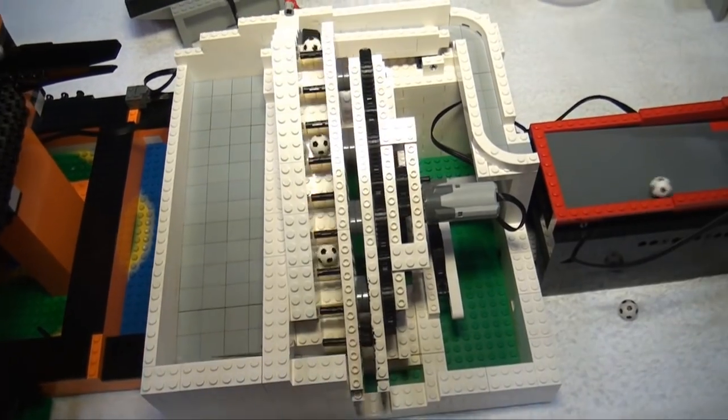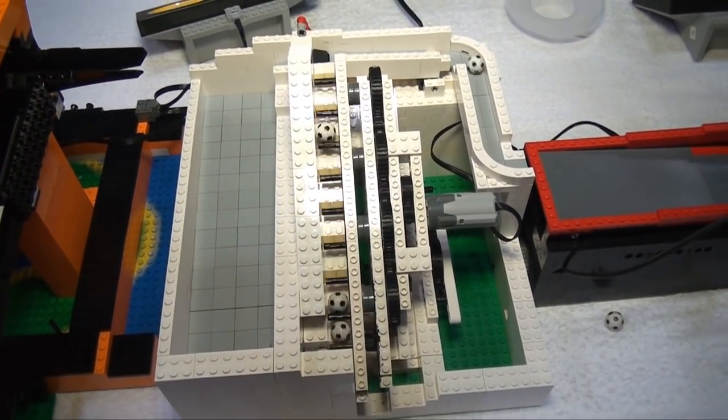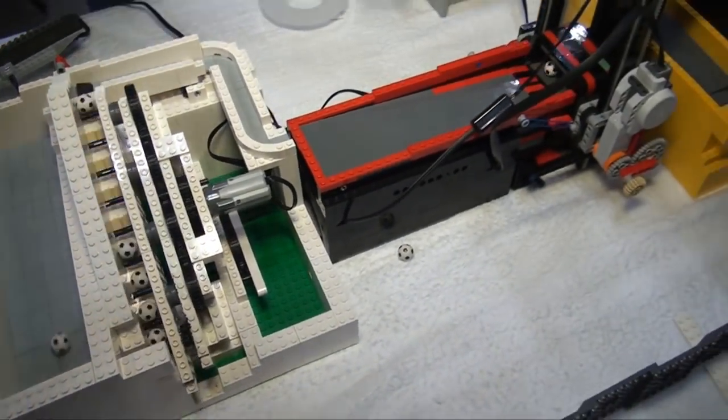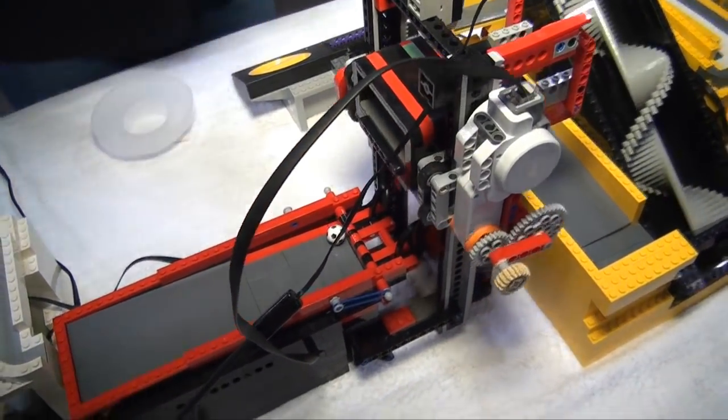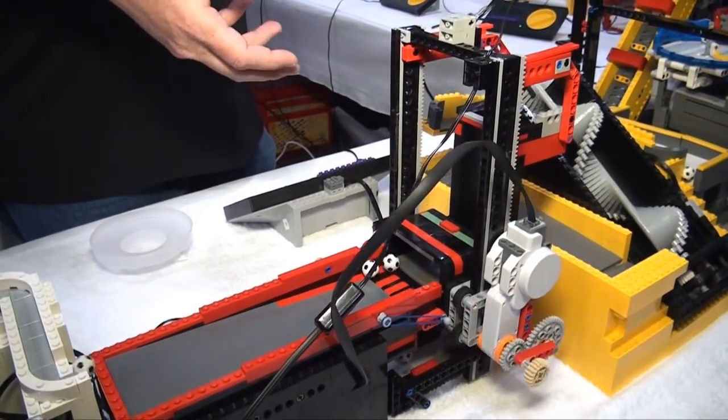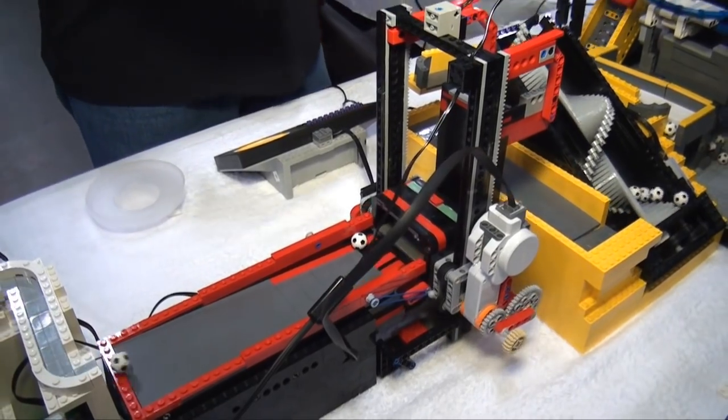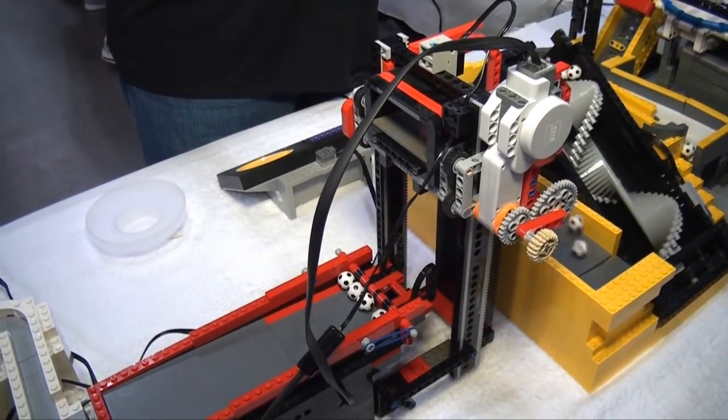And then after this module which is a very small stepper kind of thing, we move into this module is controlled by an NXT and it basically through a combination of a switch and rotation it knows when to start and stop to allow the balls to roll in and then roll back out.